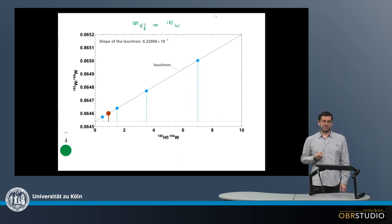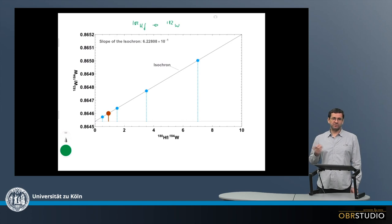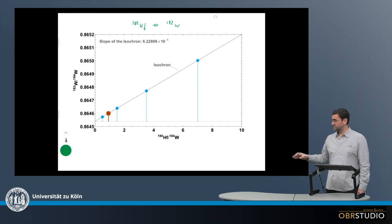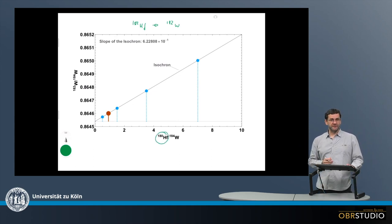But still, for such an isochron plot, we need the parent somehow represented. But we can't use the 182 parent nuclide, but we still want to have the element Hafnium. So we choose another isotope of Hafnium, a stable isotope, which in this case is the 180 Hafnium. And this is then plotted here on the x-axis.